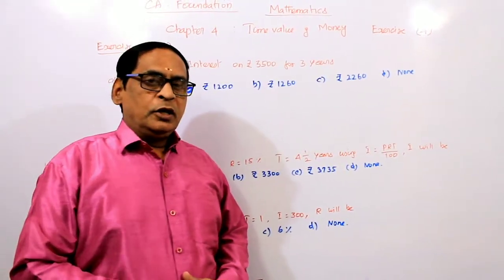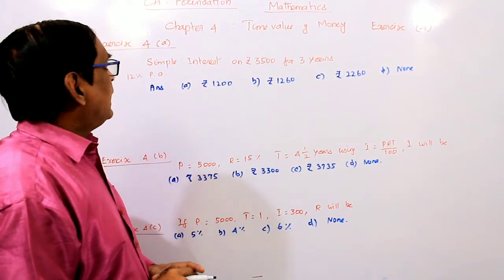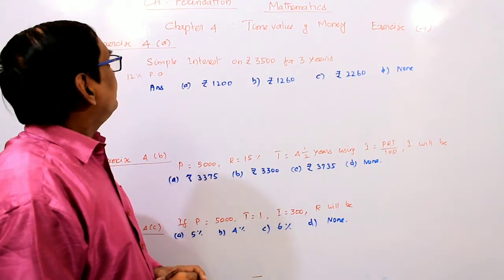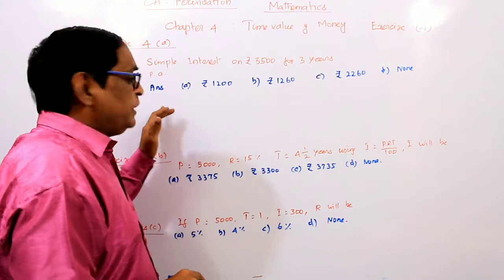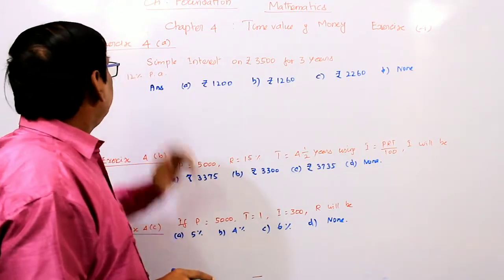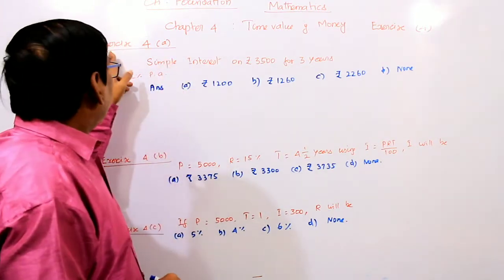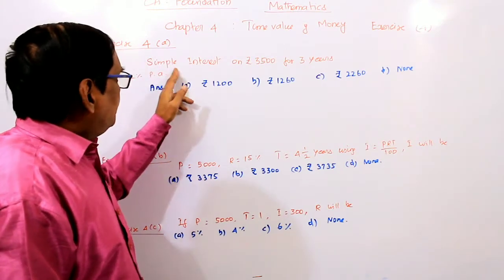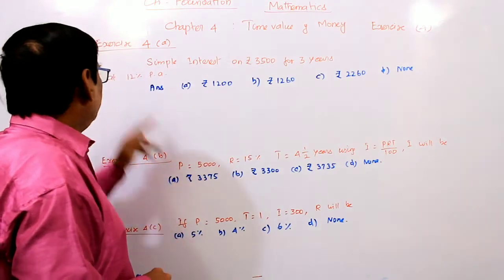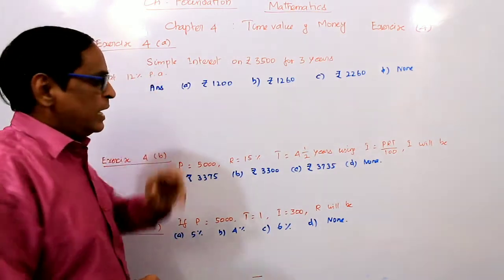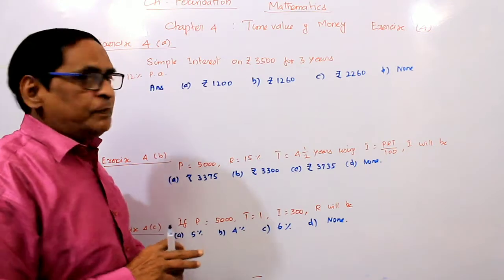Good morning students. Today we are going to solve some exercises under time value of money for CA foundation courses. We will solve each and every question under exercise 4. The first question is exercise 4A: simple interest on Rs 3,500 for 3 years at 12% per annum.